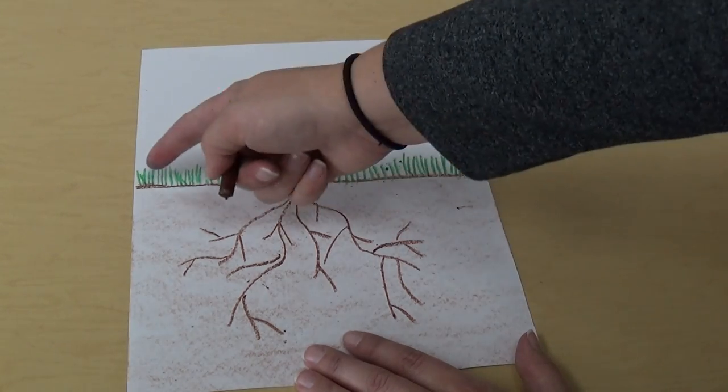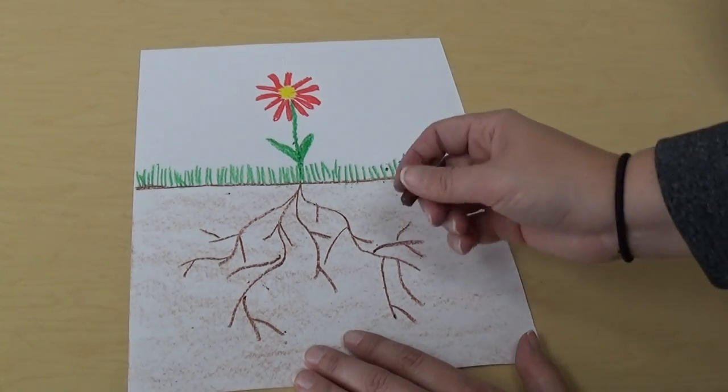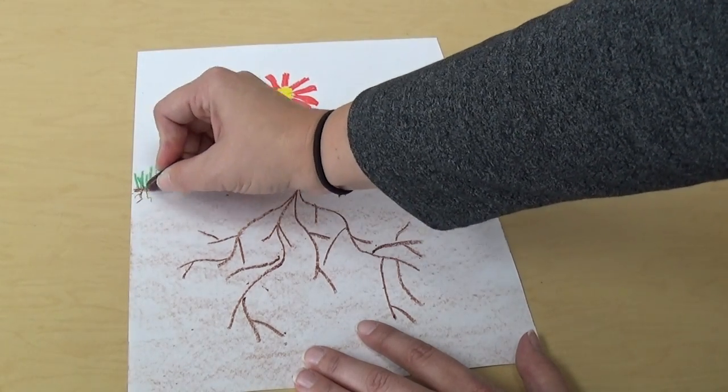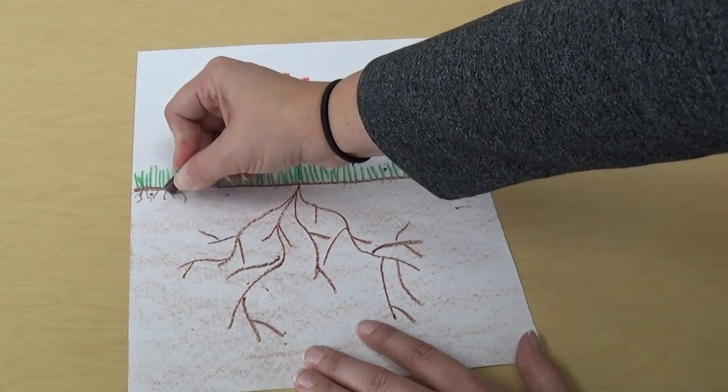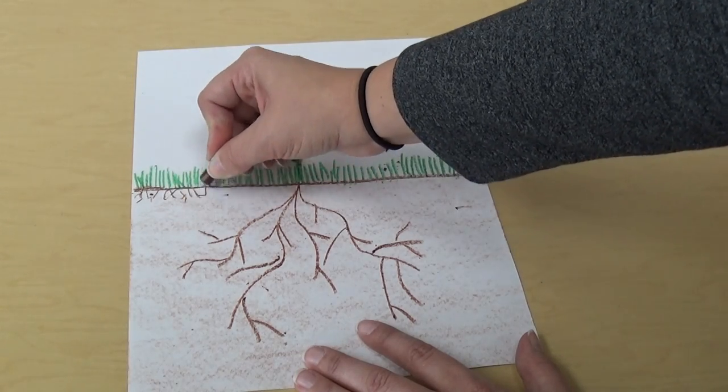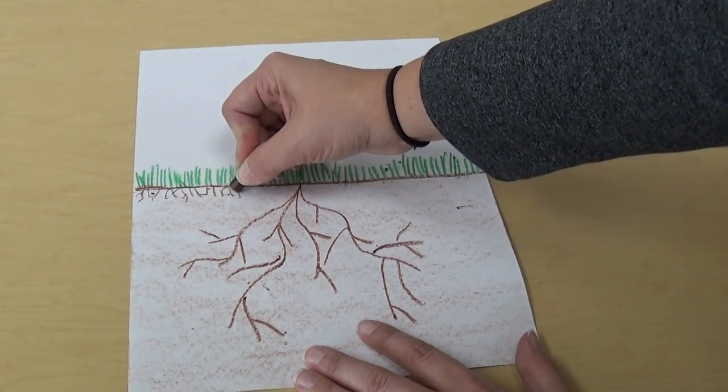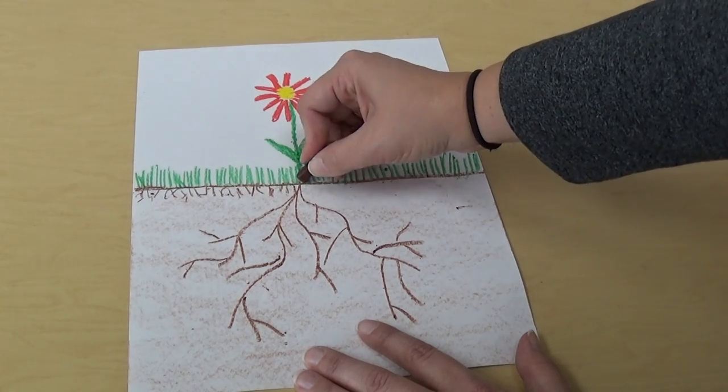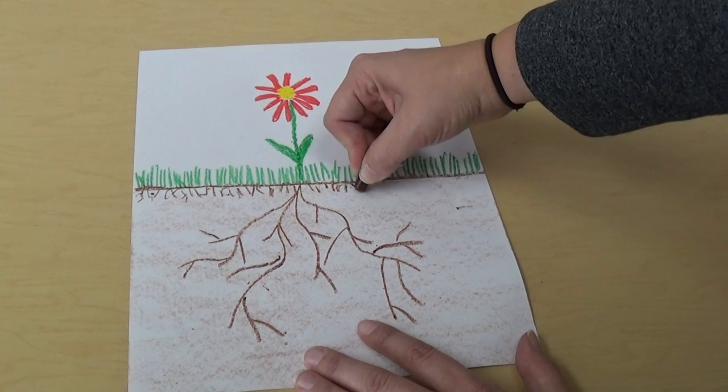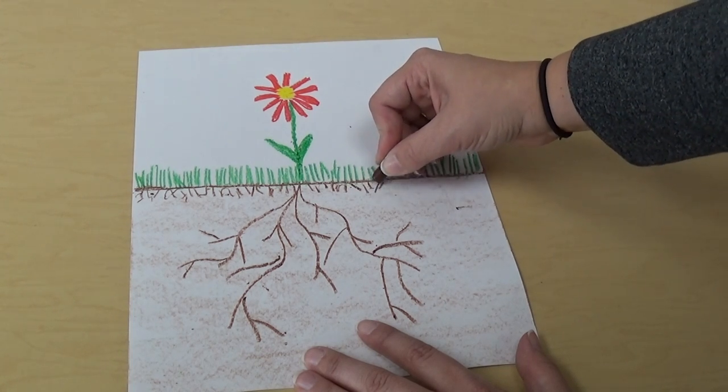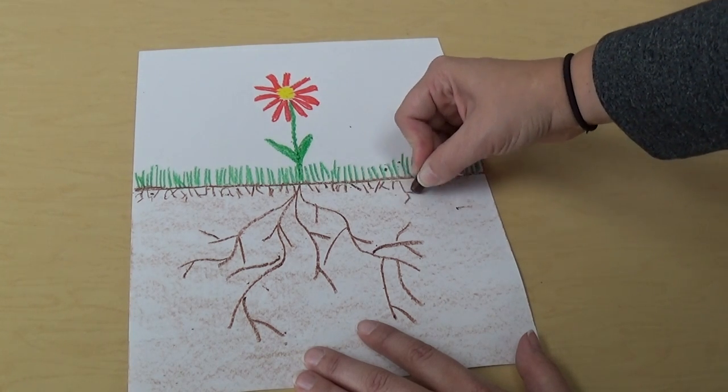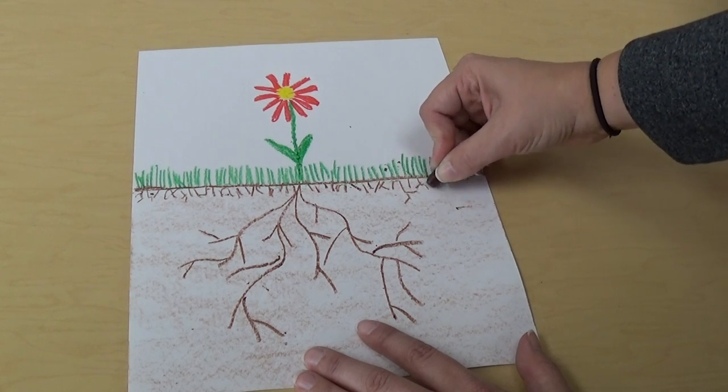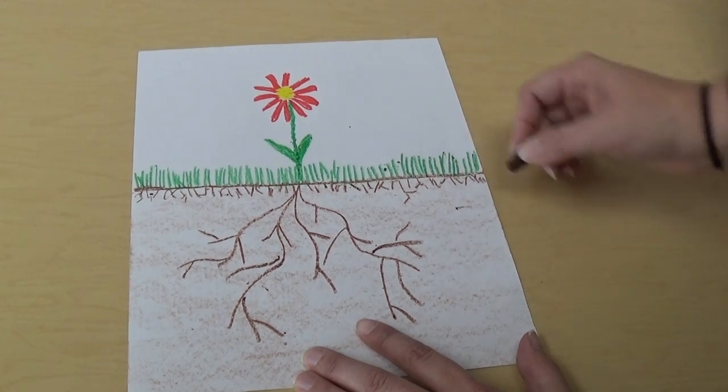And then the grass has roots too, but their roots are short, so I'm going to draw little short roots for the grass. There's lots of them though, because they go all over where the grass is. Just short little roots for the grass, going down like this. Some of them can be a little long, but most of them are going to be pretty short.